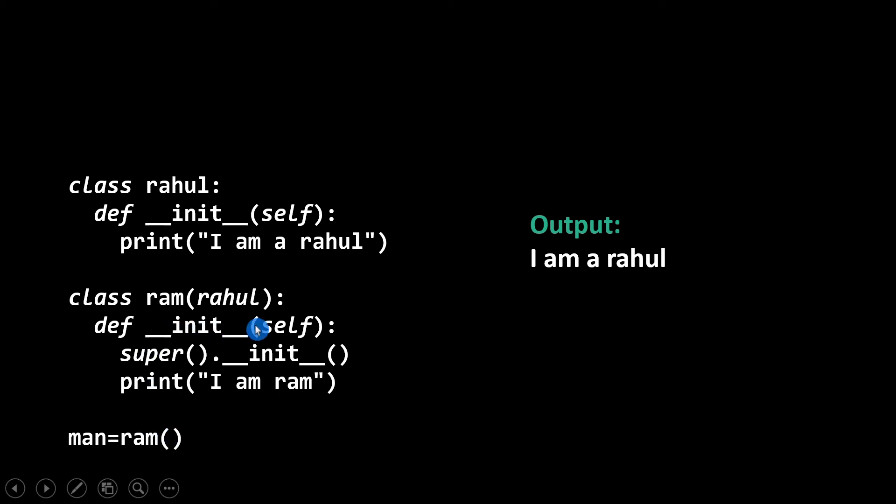After that, the super() method is used for calling this constructor. That's why it prints 'I am rahul', then 'I am ram'. After executing this function, it comes back and prints 'I am ram'.